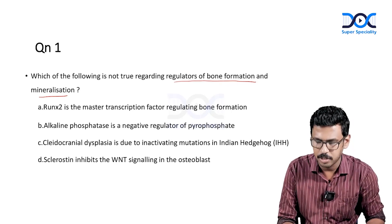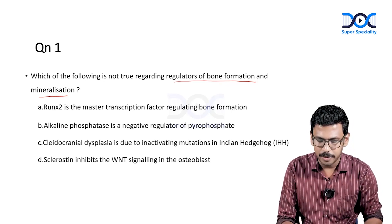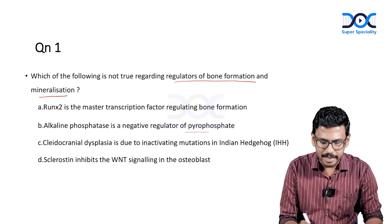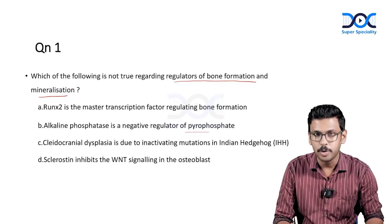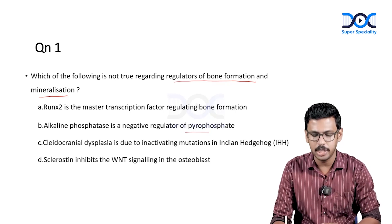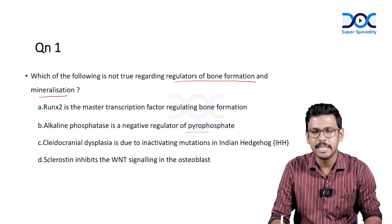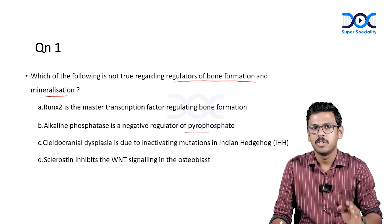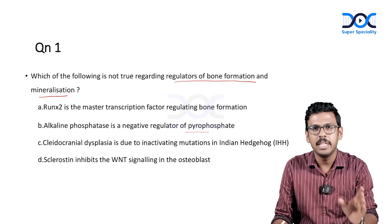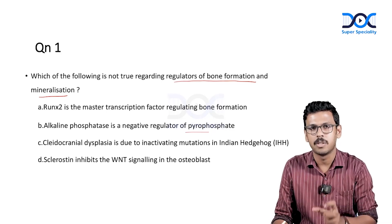The options are: RUNX2 is the master transcription factor regulating bone formation; alkaline phosphatase is a negative regulator of pyrophosphate; cleidocranial dysplasia is due to inactivating mutation of the Indian hedgehog gene; and sclerostin inhibits WNT signaling in the osteoblast. These are four very confusing options, difficult to answer without thorough conceptual knowledge.